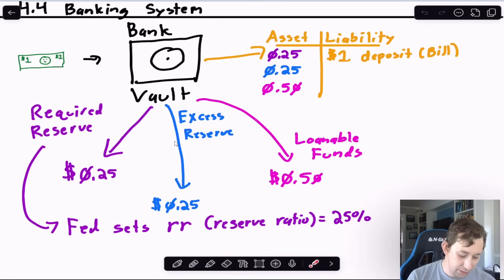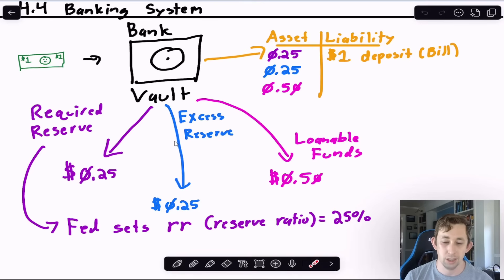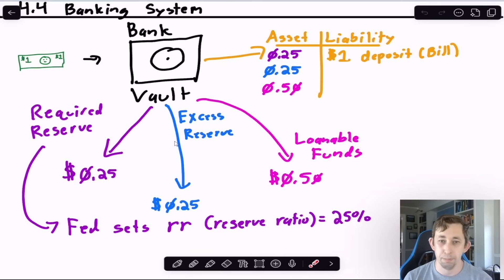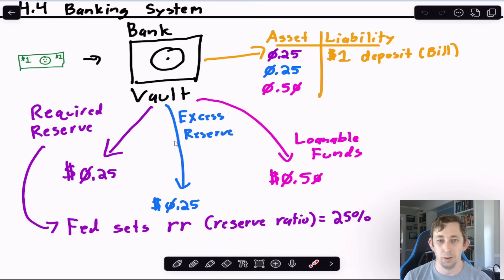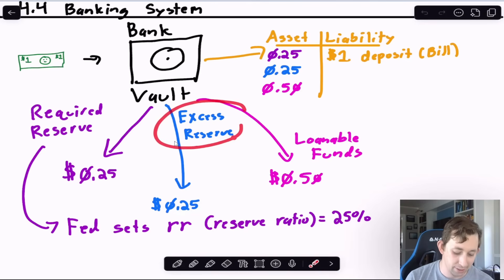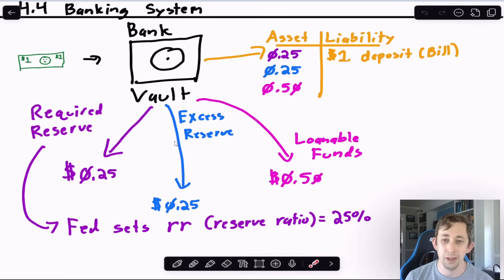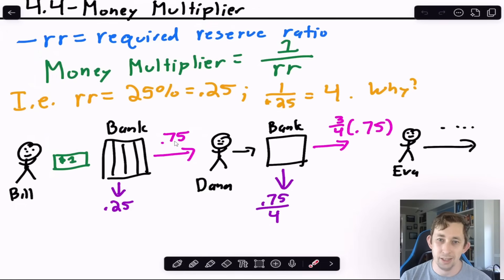The Federal Reserve requires banks to keep a percentage of deposits on hand — the reserve requirement. If the reserve ratio is 25%, the bank sets aside $0.25 per dollar in mandatory reserves. The bank may also hold additional excess reserves beyond the requirement. The remaining 50 cents — the loanable funds — is what the bank can loan out to borrowers. Mandatory reserves, excess reserves, and loanable funds together equal the original dollar deposited.